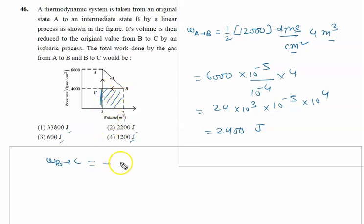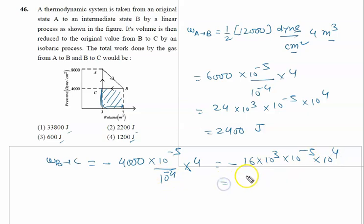So this height is again 4000, but it is dyne per centimeter square, so we will write 10 raised to the power minus 5 upon 10 raised to the power 4, into this distance 7 minus 3 is 4. So ultimately it is minus 16 into 10 raised to the power 3 into 10 raised to the power minus 4. This is 10 raised to the power plus 4, so it is minus 1600 joules.